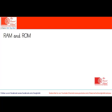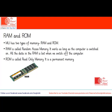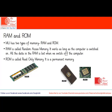MU has two types of memory: RAM and ROM. RAM is called Random Access Memory — it works as long as the computer is switched on, and all data in RAM is lost when we switch off the computer. ROM is called Read-Only Memory — it is a permanent memory of the computer.